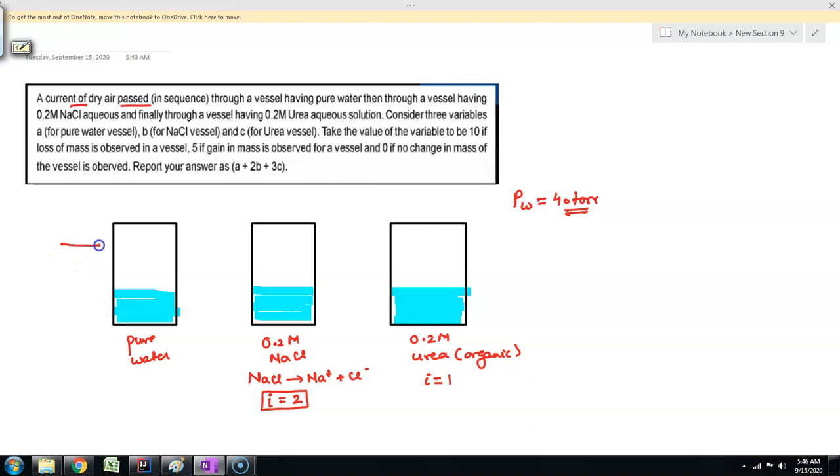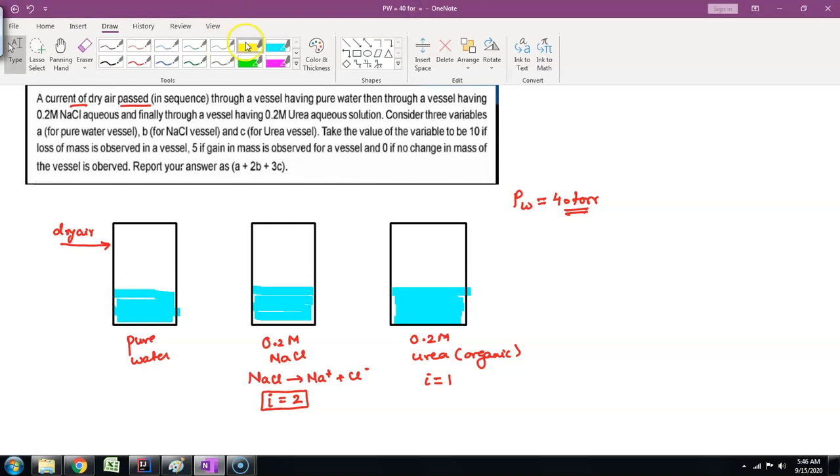Now in the first one, dry air is passing. We have to segregate air above the column into two things. One is just above the water and second is slightly above it. When we say dry air, it is not containing any water vapor.